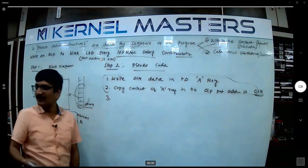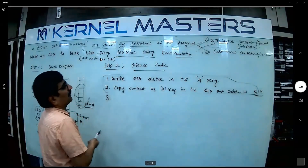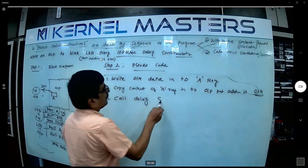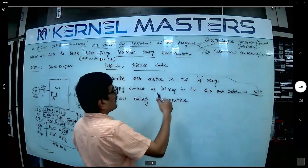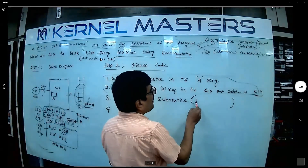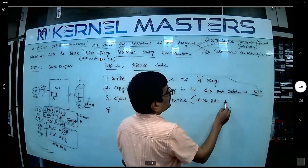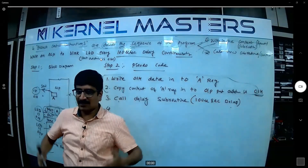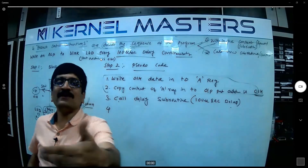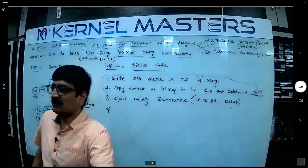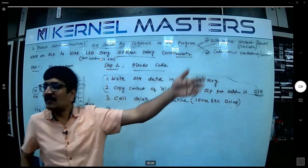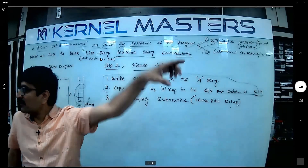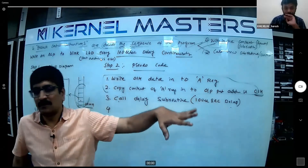After blinking the LED, we need a delay. How to manage the delay? Call the delay subroutine. The delay subroutine is a separate function you can call. This delay subroutine generates how much delay? 100 microseconds. It is a separate context — like moving from the main context to a phone call. That is why we use the CALL instruction to call the delay subroutine.